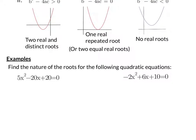So first one, what I would always write down first is what all my different letters are. So in this case I've got a is 5, b is negative 20 (put that in a bracket), and c is 20. So I'm going to have b squared minus 4ac.